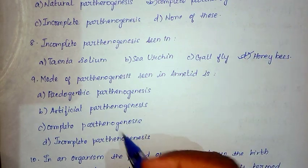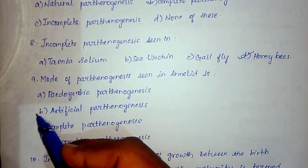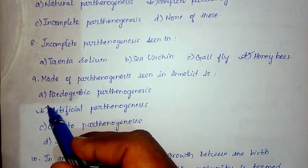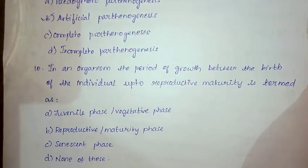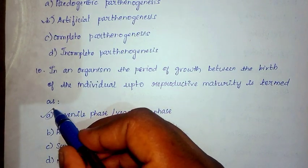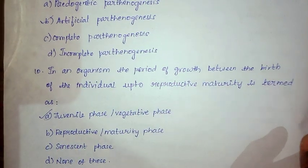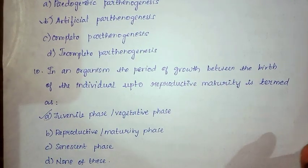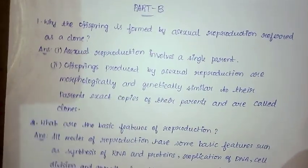For the ninth question, the correct answer is option A, juvenile phase or vegetative phase. We have now completed Part A and are moving to Part B.